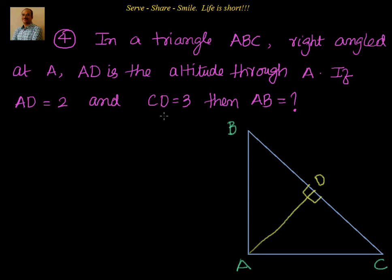We have AD as the altitude through A. We've been given that AD equals 2, so AD is equal to 2, and we also know CD equals 3. We have to find the value of AB.